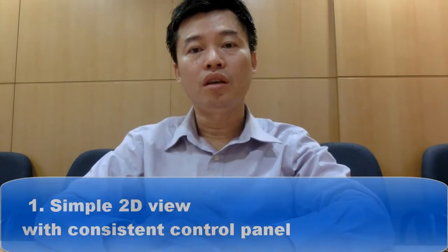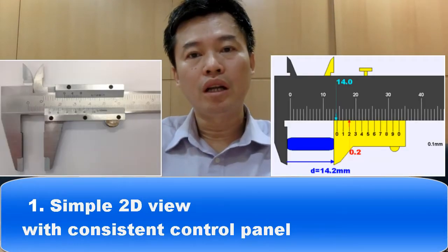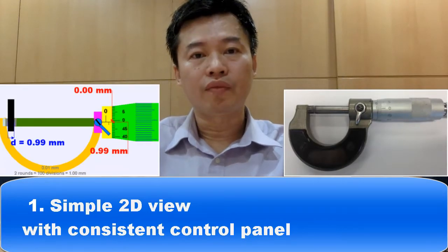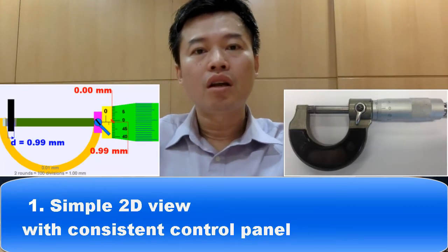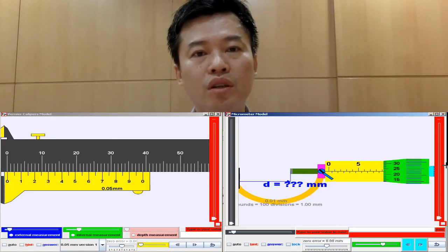The three design features that were particularly outstanding in allowing our students to learn better: Number one, a simple 2D design associated with the real equipment to bring out direct association to the tools. As well as a consistent control panel layout at the bottom of our simulation to allow students to become familiar very quickly.